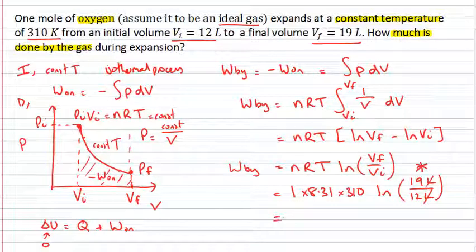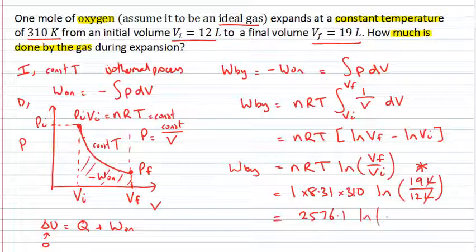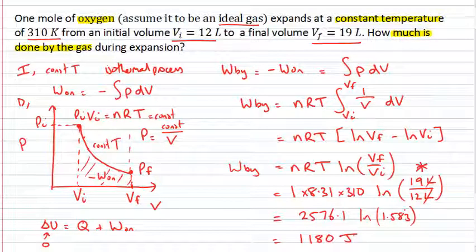Now, if I go through and work that out, I end up with 2,576.1 multiplied by the log of 19 divided by 12. So that's the log of 1.583 recurring, and that gives me 1,180 joules of energy. That's the work which is done by the gas.